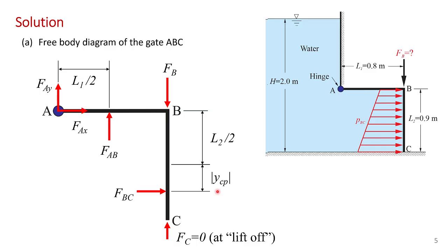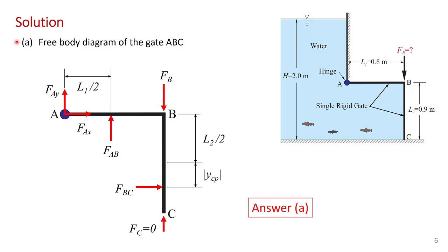For completeness, I've shown the force at point C. The problem statement asks for the minimum force at point B to hold the gate closed. With the minimum force, the gate will be just starting to open. So the force at point C will be zero for the minimum value of the force at point B. In other words, when point C is just starting to lift off the surface.